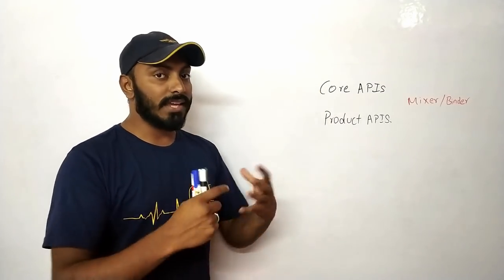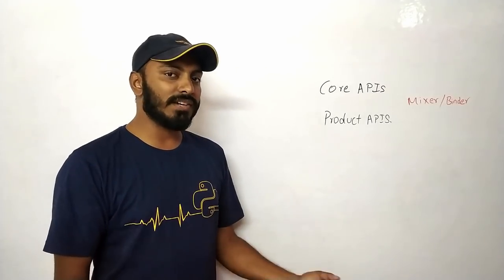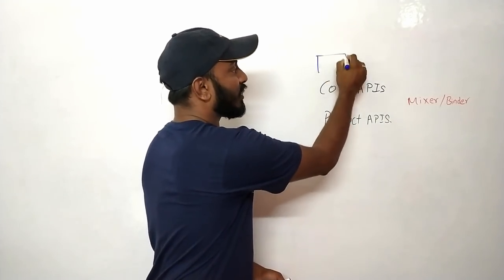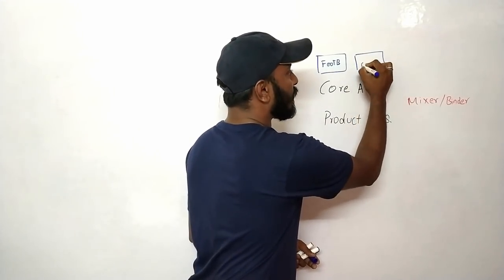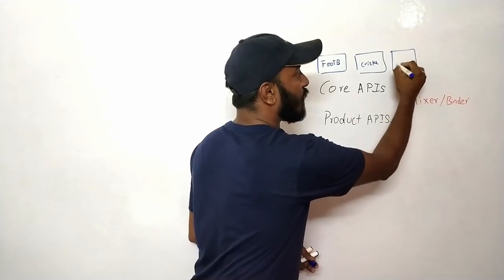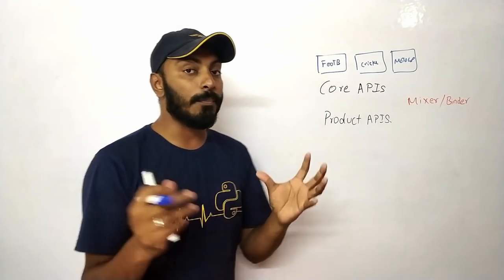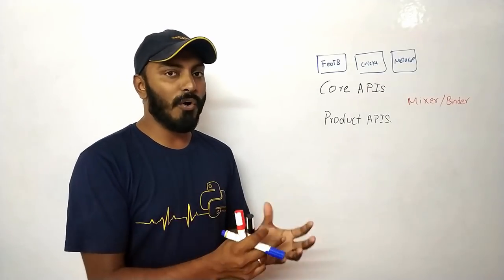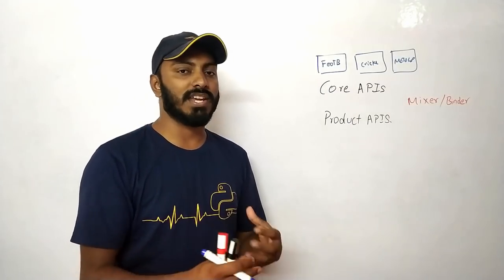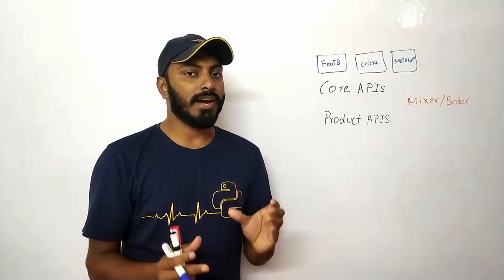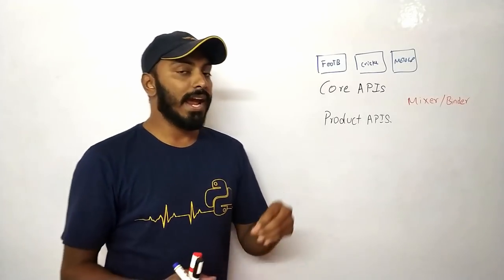Core APIs serve the basic entity of information for any given game. For example, on ESPN.com, there would be Core APIs for football, Cricket, MotoGP, and so on. Within Cricket, a Core API gives score updates for a match, another gives statistics, another gives metadata. We identify the granularity of each type of information and build individual APIs for those entities.